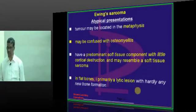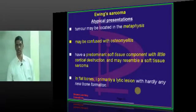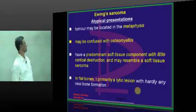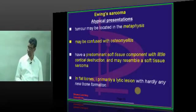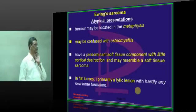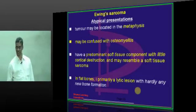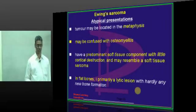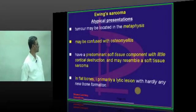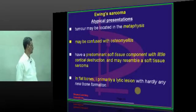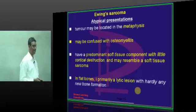Atypical presentation — the peculiar characters of Ewing sarcoma: it may be confused with osteomyelitis; the tumor may be located in the metaphysis, though it is typically diaphysis. It can have a predominant soft tissue component with little cortical destruction, so it mimics soft tissue sarcoma. In flat bones, it is primarily a lytic lesion with hardly any new bone formation.